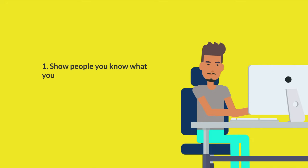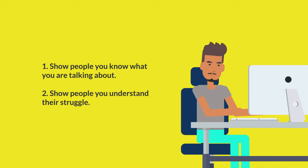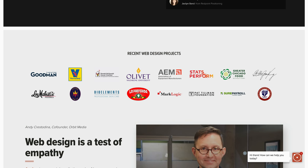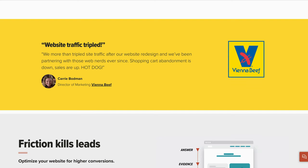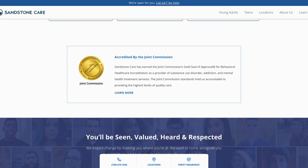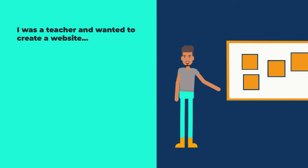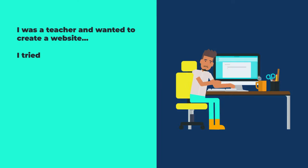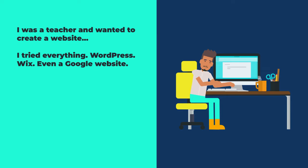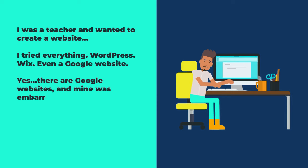Next is the expert and empathy section. This section has two goals: show people you know what you're talking about, and show them that you understand their struggle. To show authority, you can display logos of brands you've worked with, mention where your product or service has been featured, show testimonials, or briefly explain your credentials. To build empathy, revisit the struggle your customer has experienced. For my website, I mentioned being a teacher who wanted to create a website — showing authority. I also said I tried everything: WordPress, Wix, even a Google website — and mine was embarrassing. This revisits the struggle.